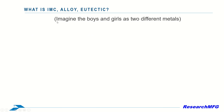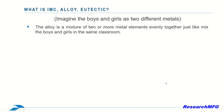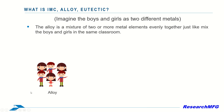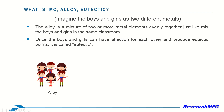Imagine boys and girls as different metal elements. Alloys are like mixing boys and girls in the same classroom, where they coexist evenly. When the boys and girls form eutectic points, it's referred to as eutectic.